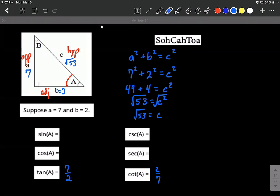So let's now fill in for sine and cosine. Sine is going to be opposite 7 over the hypotenuse square root of 53. And then the cosine is going to be adjacent 2 over the hypotenuse square root of 53.